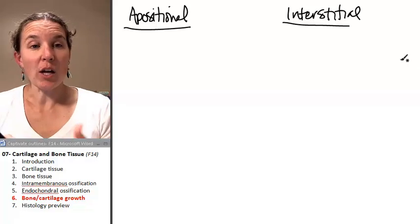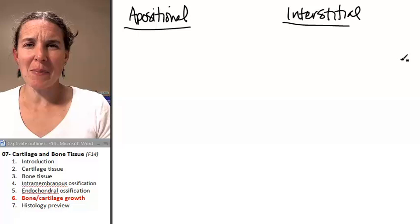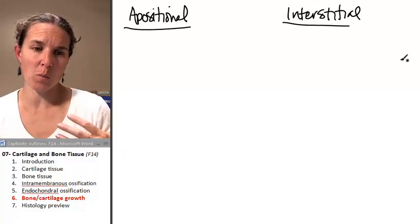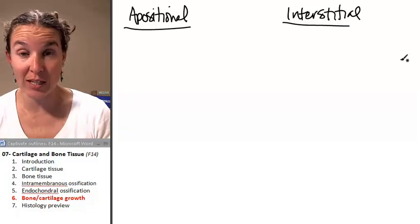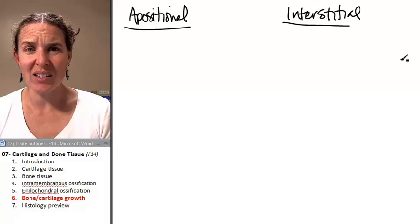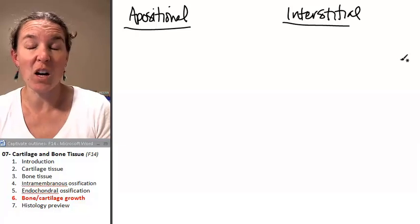So there are two ways that we can grow our bone and cartilage tissue. It makes sense that you would have a special type or mechanism by which growth takes place because we're dealing with a relatively solid tissue. It's a little bit funky.